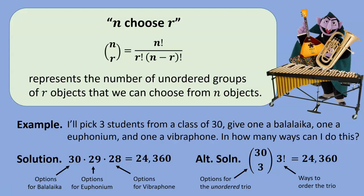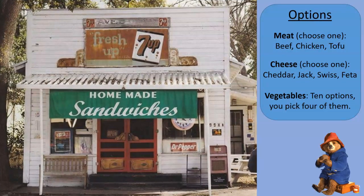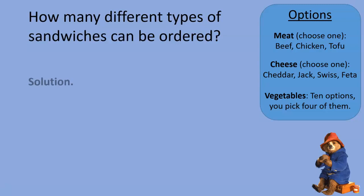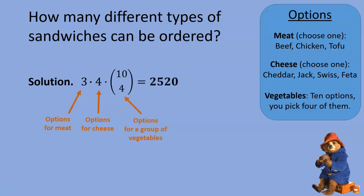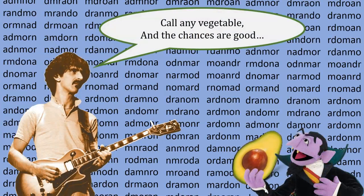Let's do one last example, returning one last time to the sandwich shop. Suppose the options are: one type of meat from three possibilities, one type of cheese from four possibilities, and four vegetables from ten possibilities. Our solution relies on the sandwich rule, since we're making a sequence of choices: three options for meat, four options for cheese, and then we must choose a group of vegetables. How many options for our group of vegetables? Ten choose four. Work this out, and you get 2,520 different sandwiches. In the next video, we will apply this to binomial random variables.